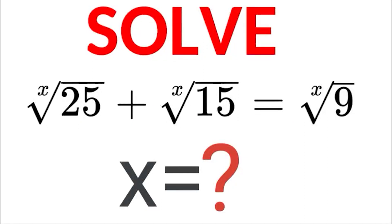Hello and a very warm welcome back to Maths Plus. Today we're solving a radical equation: 25 to the root x plus 15 to the root x is equal to 9 to the root x.